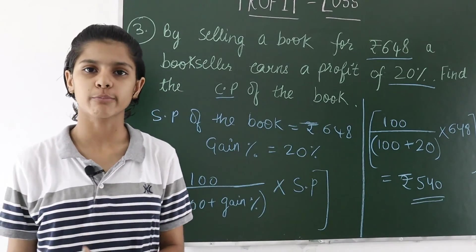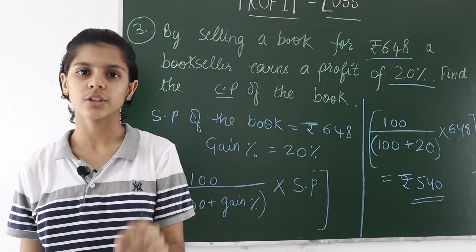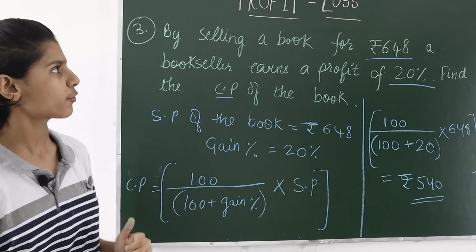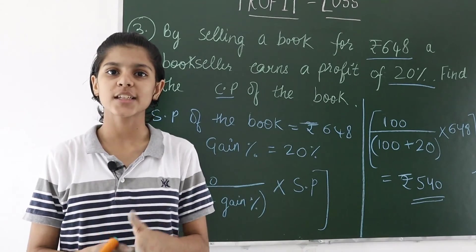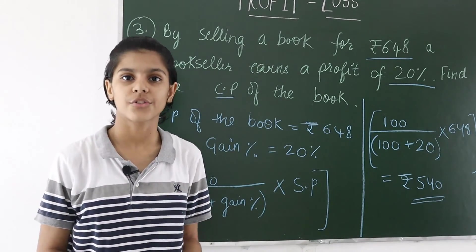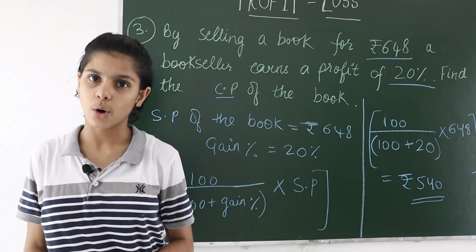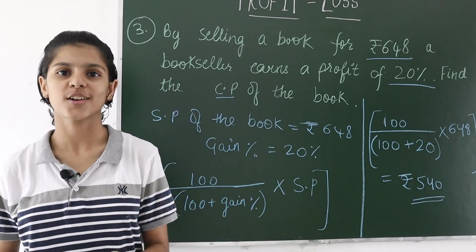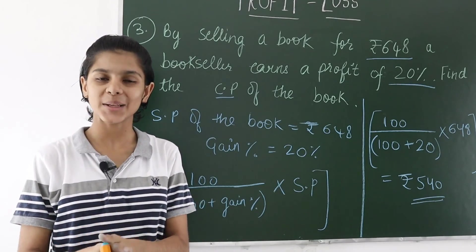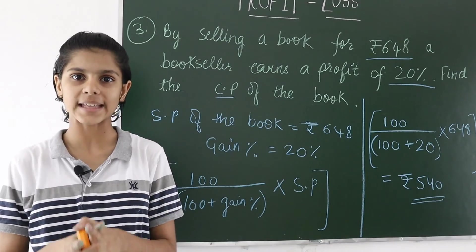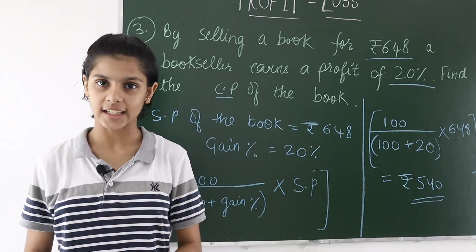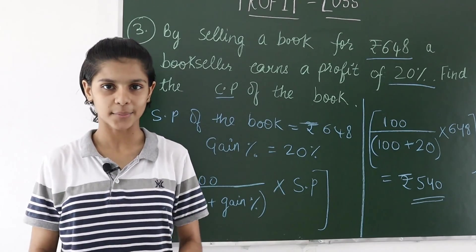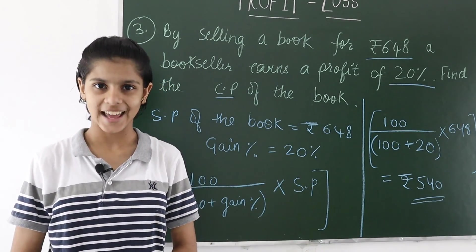There were just 4 to 5 main formulas in this chapter — just remember them and you can solve any question. Friends, we have finished this topic, profit and loss. In this video we discussed what profit and loss is, the basic formulas, and we did some questions. I hope you have understood it. I will keep making videos on other topics of maths as well, so stay connected with me. Please share your opinions and suggestions in the comment box. That's all for this video. Thank you.